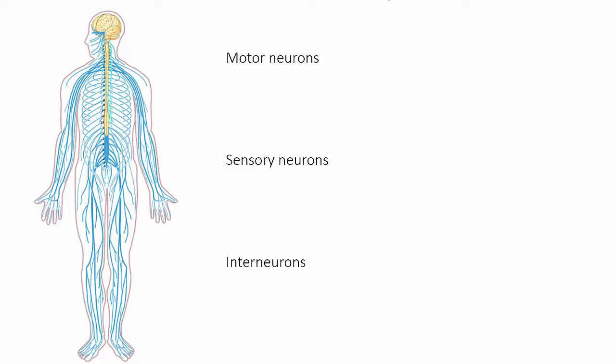The simplest classification, however, is based on the direction in which information flows, and based on this we have three kinds of neurons.